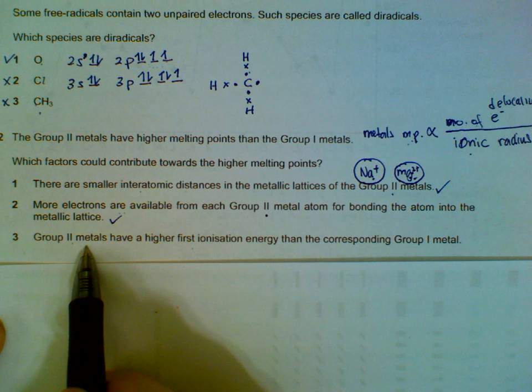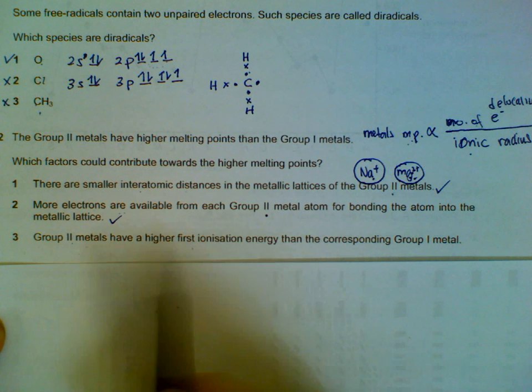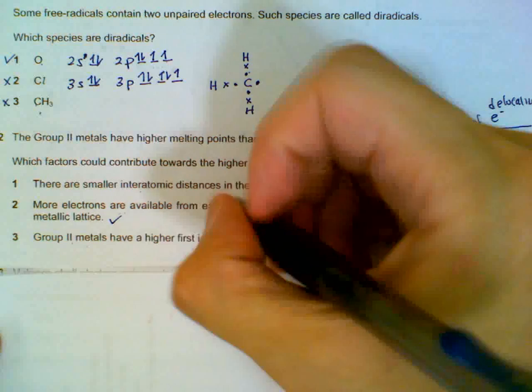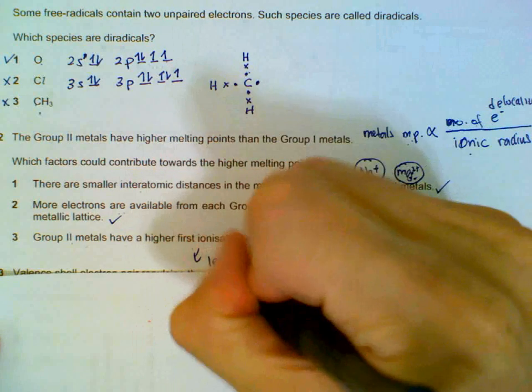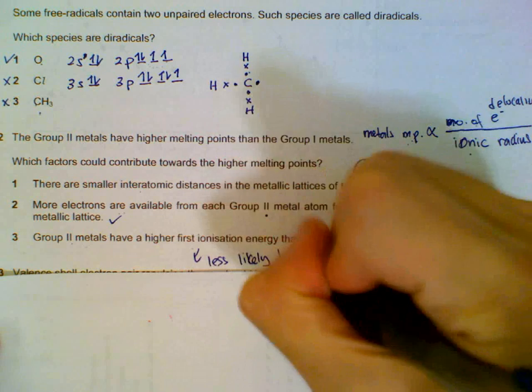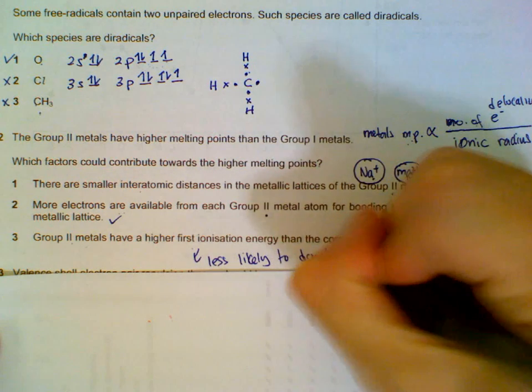So this one contradicts the pattern that we are supposed to have that supports group 2 having a higher melting point. If you have higher ionization energy, it means you're less likely to donate electrons or to delocalize your electrons into the sea of electrons.